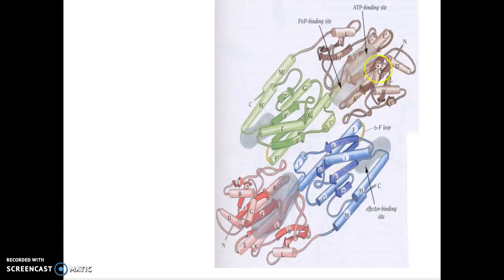Each polypeptide forms two domains. One domain has active sites for ATP and F6P binding site, and the other domain has effector binding site. Nearby, the loop region called 6-F loop is critical in regulating activity.